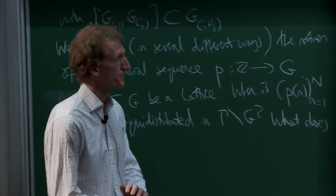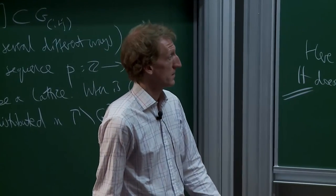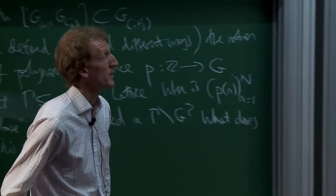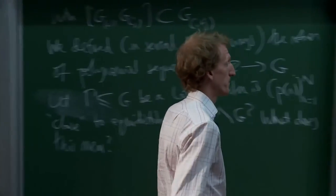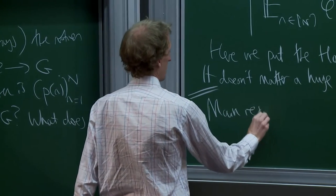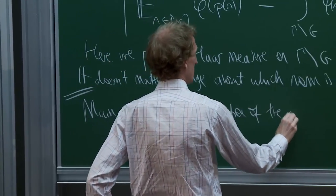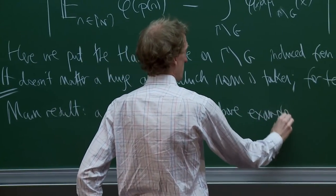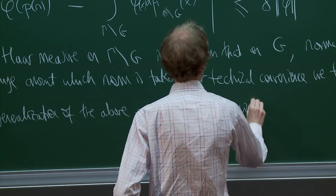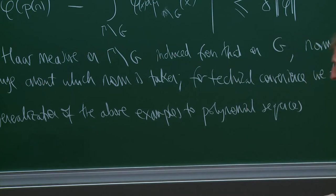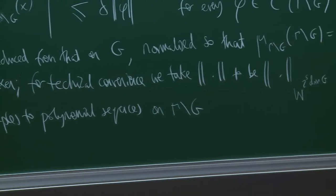The main result I want to talk about is a more or less complete statement about when a polynomial sequence on G mod gamma is equidistributed in this sense — it generalizes really the examples I showed above. It generalizes to polynomial sequences on G mod gamma with this quantitative notion of distribution.